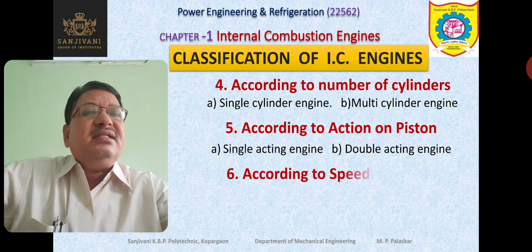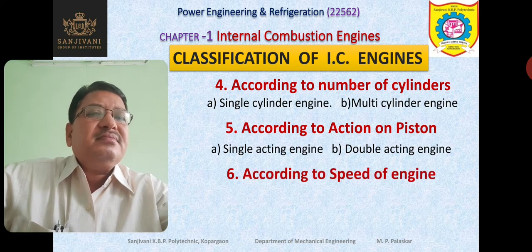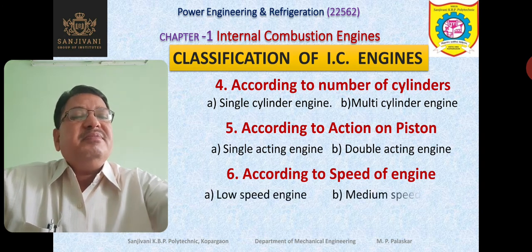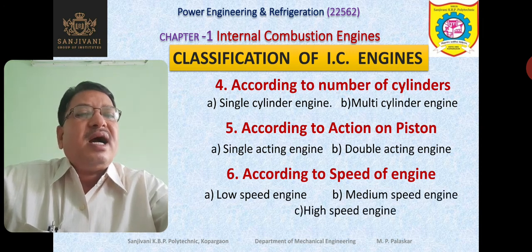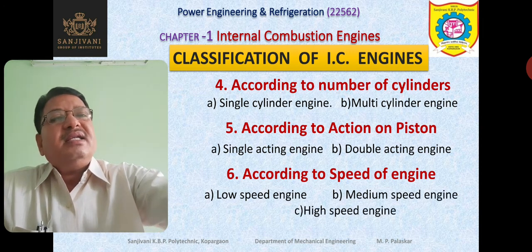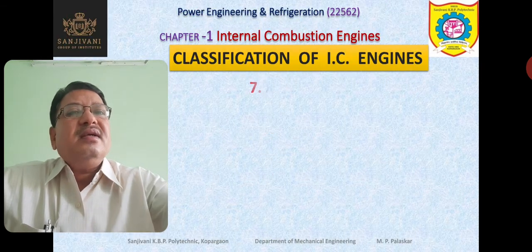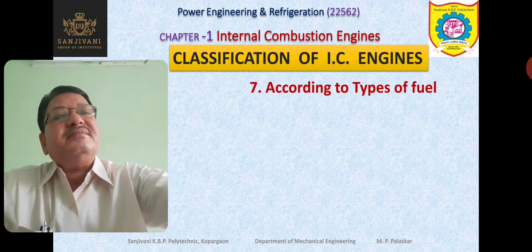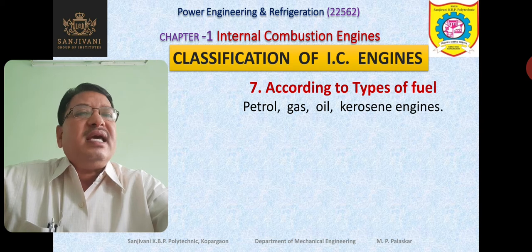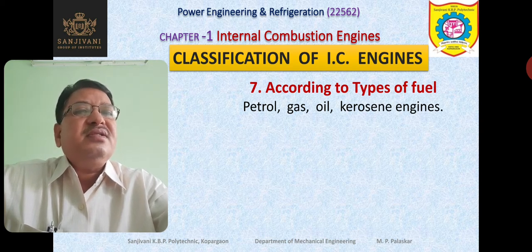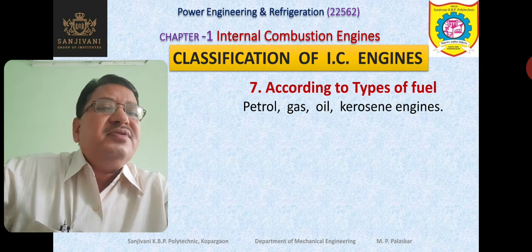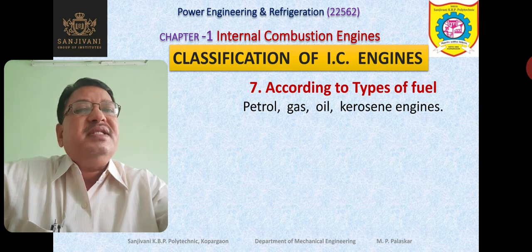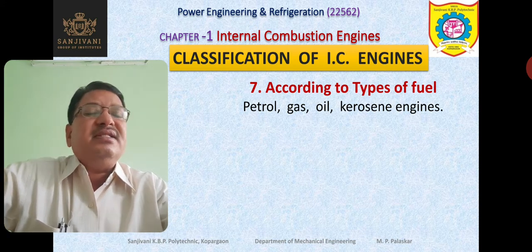IC engines are also classified according to the speed of the engine. The engine may have low speed, medium speed, or high speed — depending upon that, the engines are classified. Engines are also classified according to the type of fuel used — whether petrol, gas, oil, kerosene, or diesel. If petrol is used, we say petrol engine; if gas is used, we say gas engine, and so on.